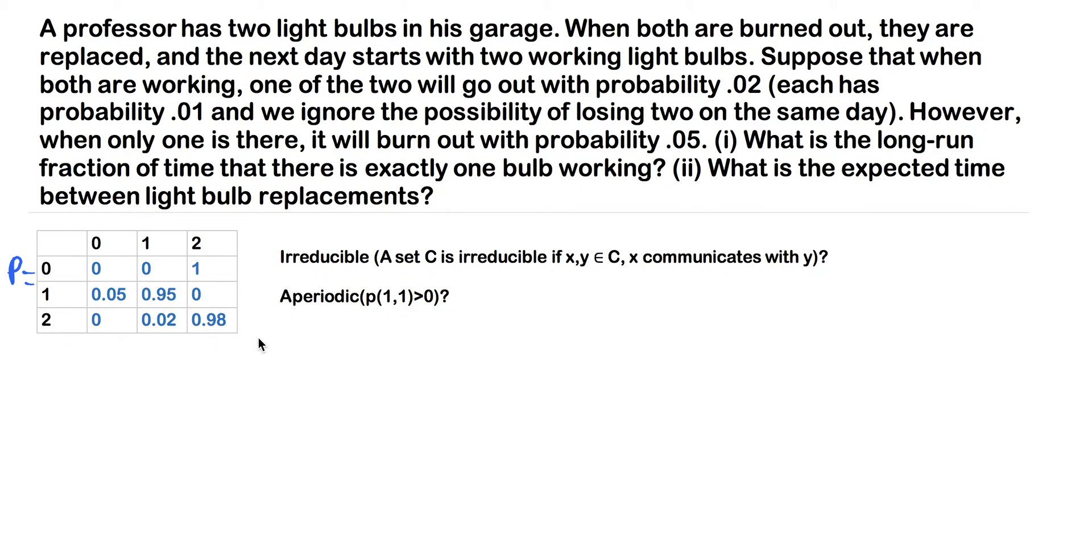Now, we'll move down to the second row as the question moves on—or the third row, excuse me. Suppose that when both are working, so we're starting out here with two working light bulbs. One of the two will go out with probability 0.02. So this is why we have 0.02, right? Because one of them is going to go out with probability 2%.